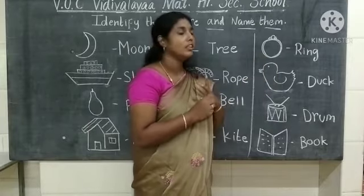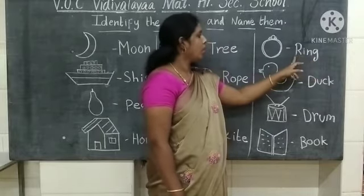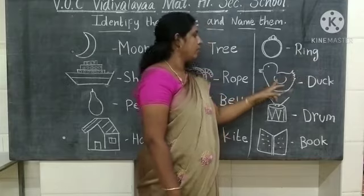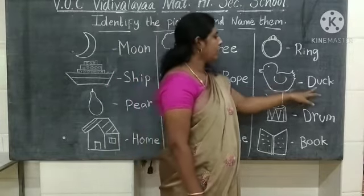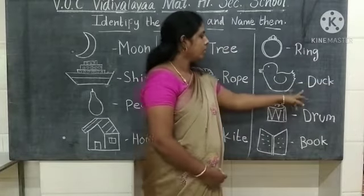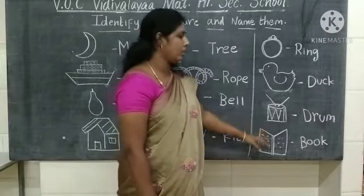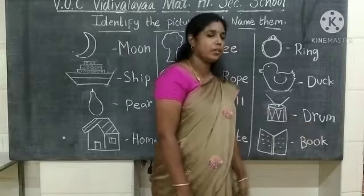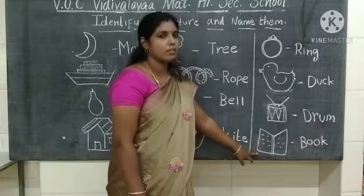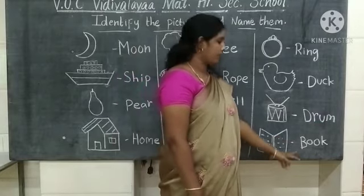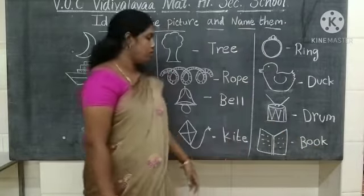What picture is this? This is a ring. What is the spelling of ring? R-I-N-G — ring. What picture is this? This is a duck. D-U-C-K — duck. What picture is this? This is a drum. D-R-U-M — drum. What picture is this? This is a book. B-O-O-K — book. Did you understand, children?